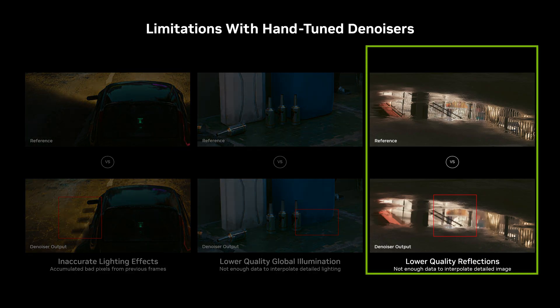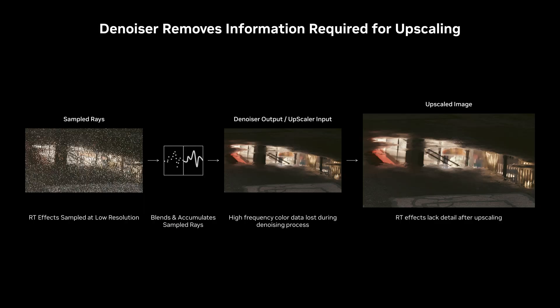Similarly, reflections can have lower detail because the denoiser blends information across the frame. The detail in this reflection was reduced because the denoiser blurred pixels together. These days, ray tracing is followed by upscaling, and that makes the job of the denoiser even more challenging because the denoiser naturally removes high frequency information in order to make a smooth image.